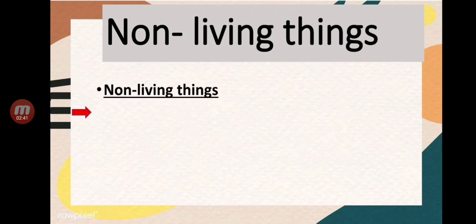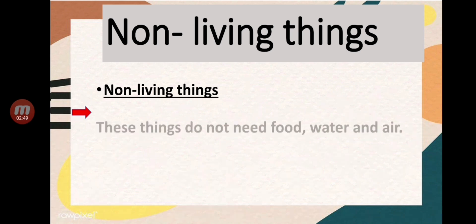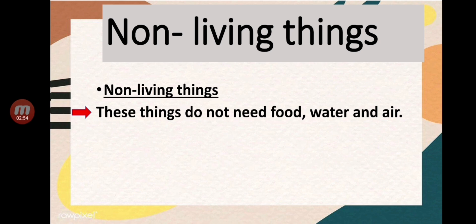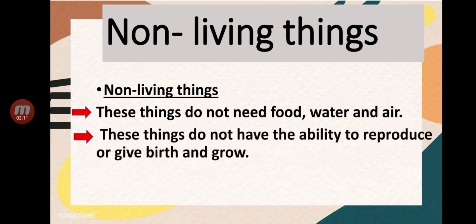Non-living things do not need food, water, and air. They also do not have the ability to reproduce or give birth, and they do not grow. Non-living things are the opposite of living things. They cannot make other living things without humans, and they will not grow on their own.